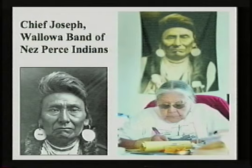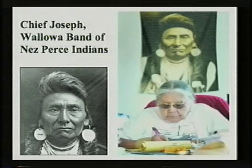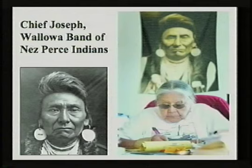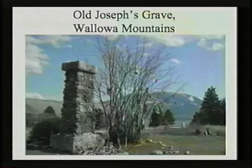The Wallowa Band of Nez Perces, numbering only 431 after the war, were held as prisoners and sent to Kansas, and then later to Oklahoma Indian Territory. During exile, a quarter of the band died from malaria, cholera, and malnutrition. Finally, in 1885, the federal government allowed the 268 remaining Nez Perce prisoners to return to the Pacific Northwest, but not to their homeland in the Wallowa Valley. Chief Joseph and his people were sent to Nespilim on the Colville Indian Reservation in central Washington to join with several bands of Indians from that state. Many descendants of the band still live there today, but they have no recognized legal rights to their Wallowa Aboriginal territory, although their spiritual connection with their ancestral homeland is still very strong.